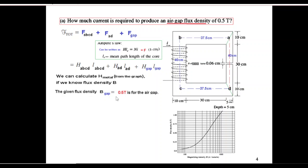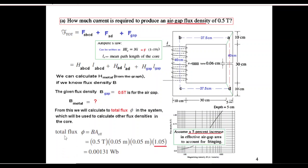We can calculate H_metal from the graph if we know the flux density B. Given the flux density in the gap is 0.5 T for the air gap. From this we can calculate the total flux, phi, in the system which will be used to calculate the other flux density in the core. And the flux formula is phi equals B into A_effective.